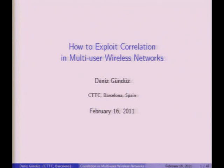The title of the talk is 'How to Explore Correlation in Multi-User Wireless Networks.' Correlation can appear in many places and be used for many different purposes. Here, specifically, I'll be talking about correlation in sources — how to compress these sources in a distributed manner and how to transmit this correlated information over a wireless network.